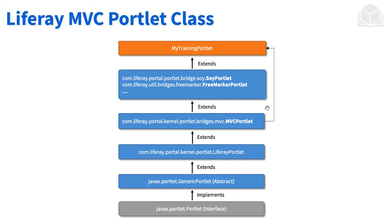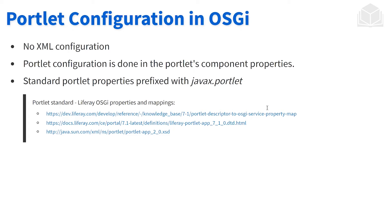Looking at the anatomy of MVC Portlet, you'll see it extends a generic portlet, so a lot of the principles from a standard portlet still apply. In our OSGI-based portlets, there are no XML configurations — no portlet.xml, no web.xml. All of those properties are defined within the component annotation. You'll also notice that all the Java standard properties we'd expect in portlet.xml are prefaced with javax.portlet.